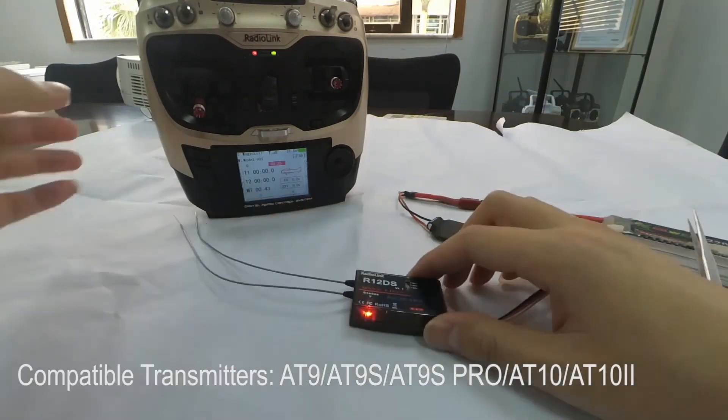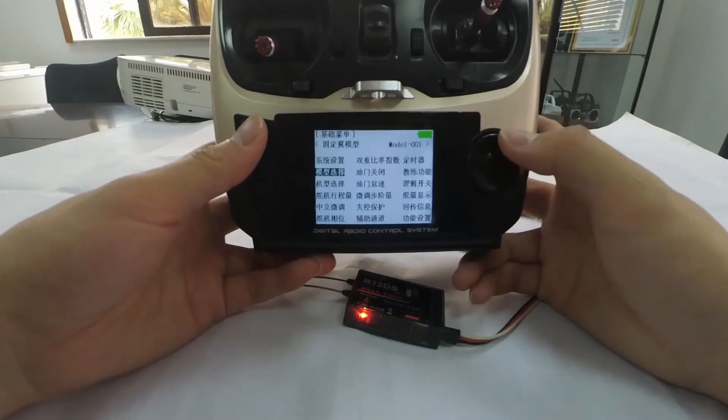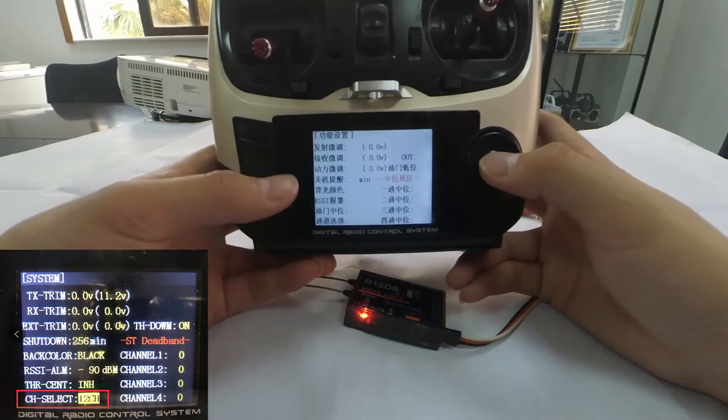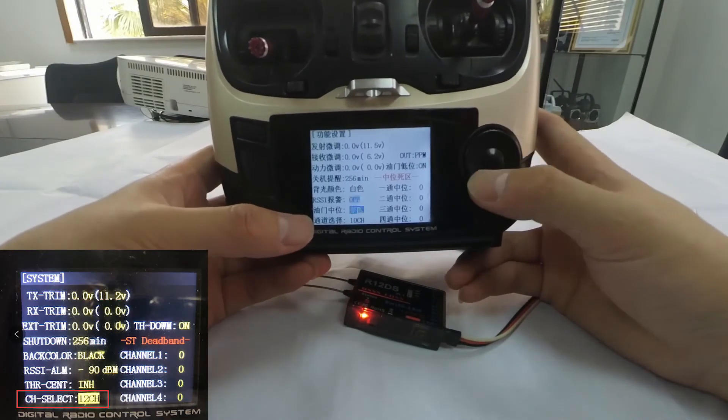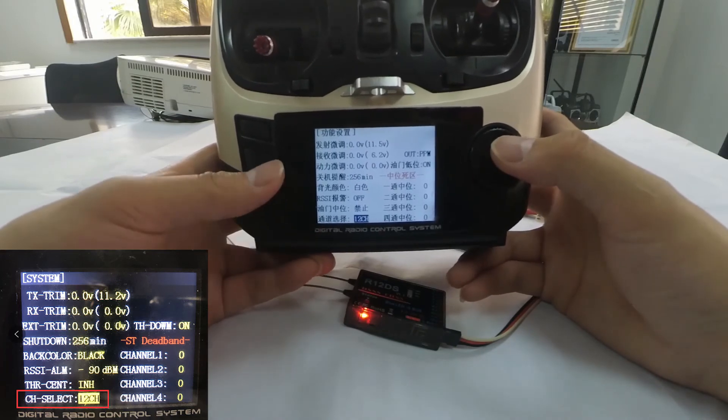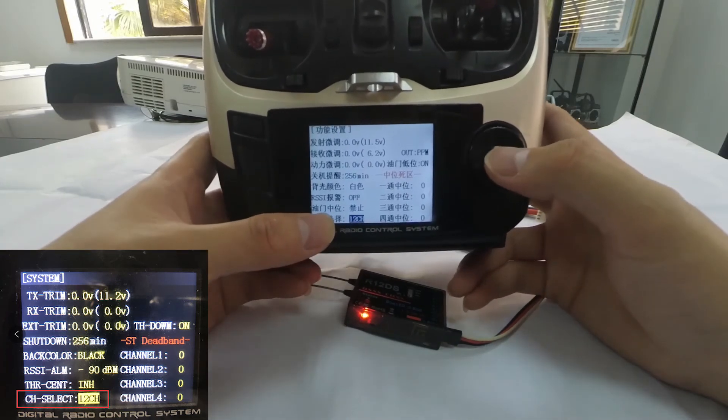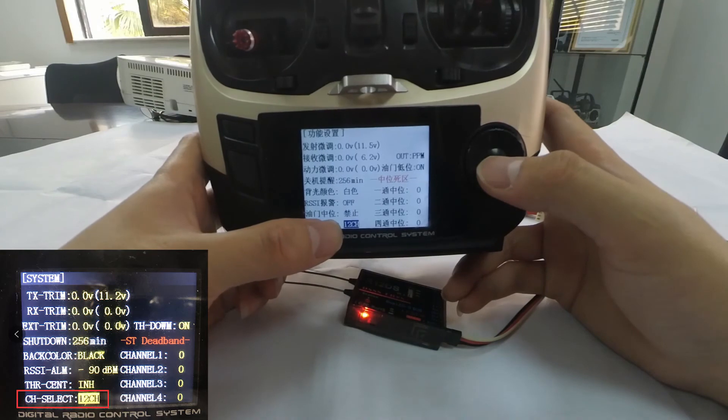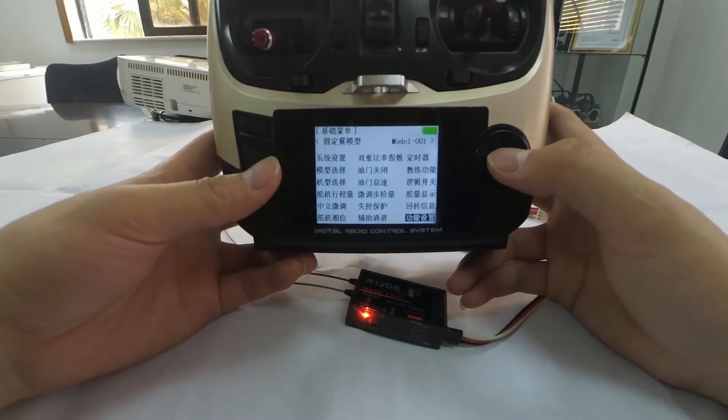When using this receiver, if the firmware of your transmitter is the latest, we also need to enter the system menu to check the channel quantity at channel select and change it as 12 channels, because this receiver is a 12 channel receiver.